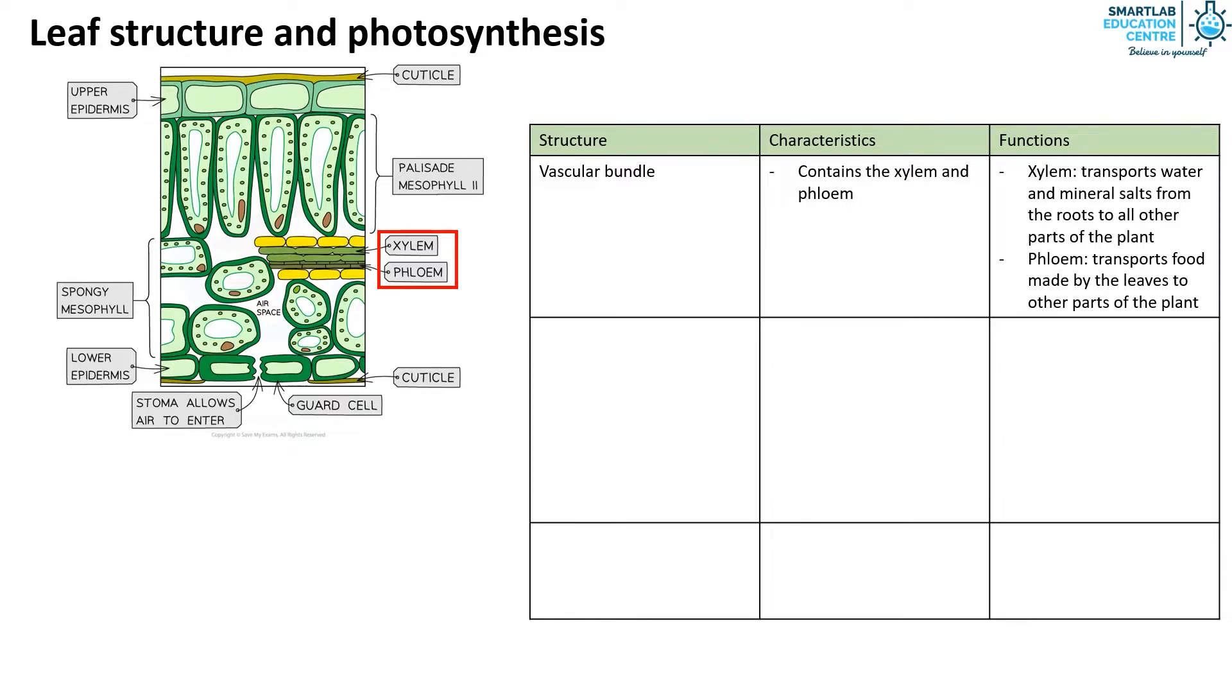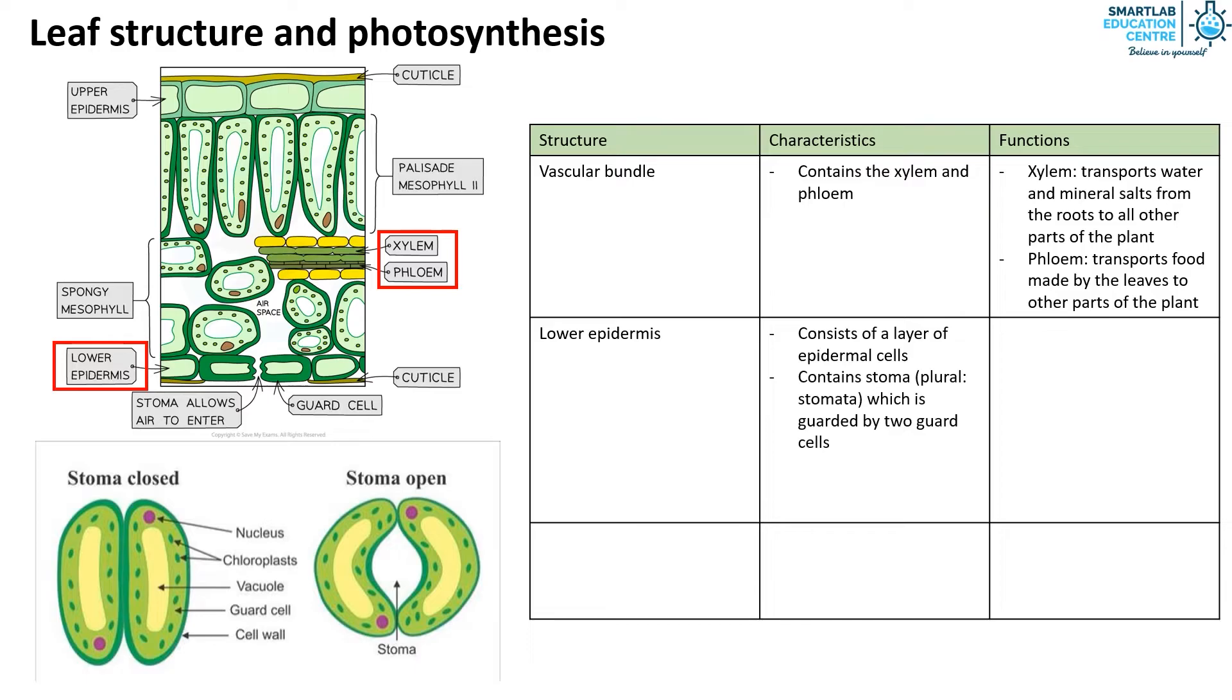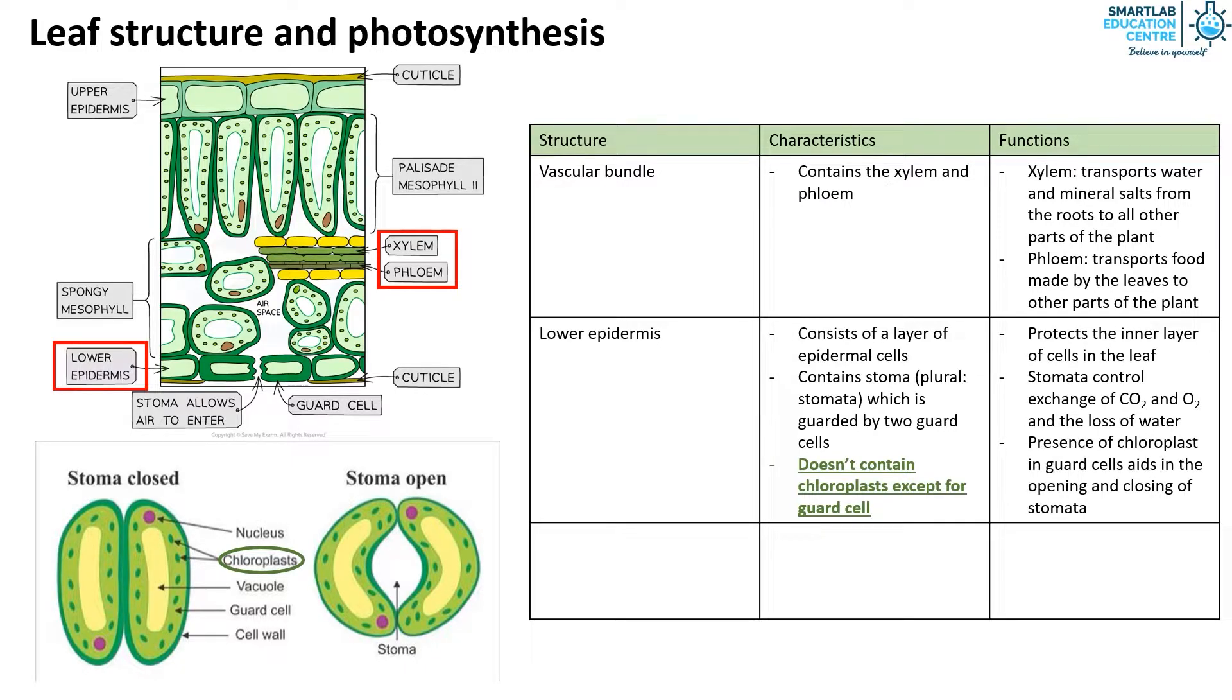The lower epidermis consists of a layer of epidermal cells. It also contains stoma which is guarded by two guard cells. While the lower epidermal cells don't contain chloroplast, the guard cells do contain chloroplast. The lower epidermis protects the inner layer of cells in the leaf. The stomata help control exchange of carbon dioxide, water, and the loss of water. The presence of chloroplast in the guard cells aids in the opening and closing of the stomata.